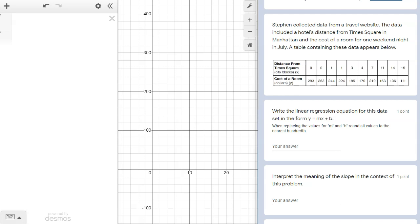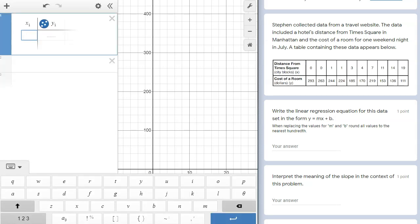As you go further away from that destination, the cost decreases because these are presumably less desirable hotels for travelers. The first task here says to write the linear regression equation, so we'll need to move over to Desmos to get that information. I'm going to start by tapping the plus sign in the top left-hand corner and I'm going to select Table from the menu.